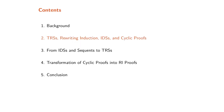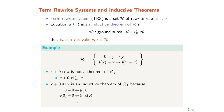Now we briefly introduce term rewrite systems, rewrite induction, inductive definition sets, and cyclic proofs. A term rewrite system is a set R of rewrite rules l to r. For the equation s = t, if for all ground substitutions theta, s*theta and t*theta can be rewritten into each other by R, then we say the equation s = t is an inductive theorem of R. For example, R1 has two rewrite rules, and the equation x + 0 = x is not a theorem of R1, but is an inductive theorem.